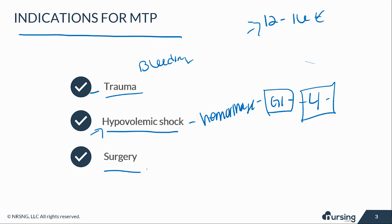Another example of indications would be surgery. CABG patients who come out after open heart surgery are at high risk for bleeding. We have to be ready to activate what we call a code heart at the hospital when it's a bypass patient that's bleeding and we need to get as much blood in them as quickly as possible. These are situations where you need to rapidly replace blood products in order to perfuse vital organs.